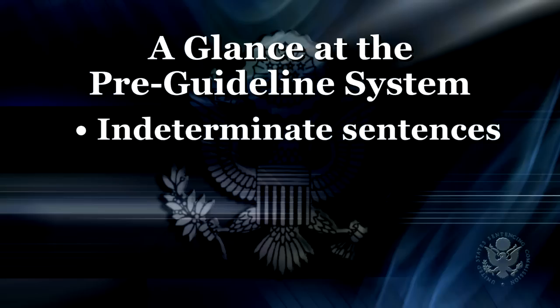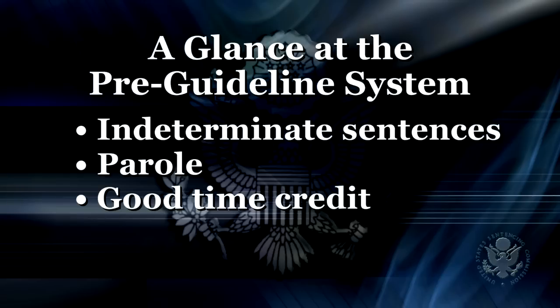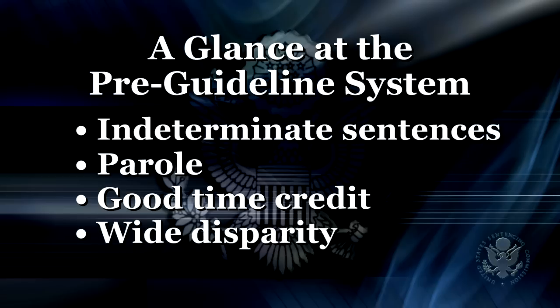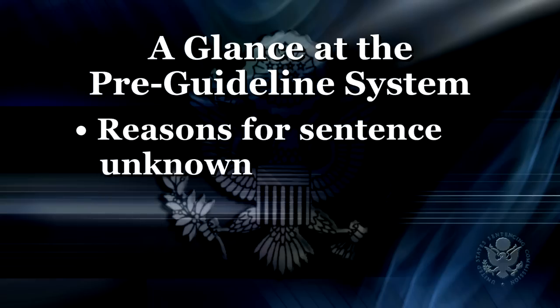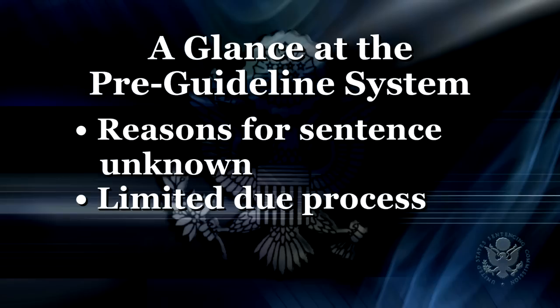The Federal System was an indeterminate sentencing scheme. Parole allowed Federal defendants to have their prison sentences reduced by as much as a third of the sentence pronounced by the judge. Good time credit allowed defendants to have their prison sentences reduced by another third. Without sentencing guidelines to advise the court, Congress found there to be wide disparity in sentences for similarly situated defendants. Judges could sentence anywhere within broad statutory penalties — zero years to life imprisonment, for example — and the reasons for the sentence imposed by the judge were unknown. In addition, this pre-guideline system also contained limited due process rights.